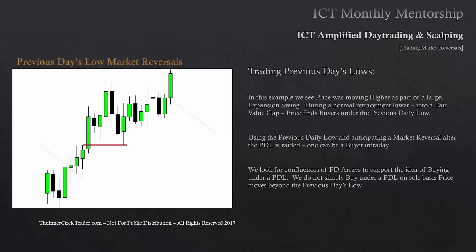When looking to trade below the previous day's low as a buyer and anticipating higher prices, price was moving higher as part of a larger expansion swing. During a normal retracement lower into a fair value gap, price finds buyers under the previous day's low. This candle opens, trades down, closes in the fair value gap, and then rallies up with a higher close. The candle prior to it trades down below that candle's low. You can already be thinking about being a buyer below that candle's low because the fair value gap exists below it. When price trades under the previous day's low and into a discount array like a fair value gap, that's where you'll find buyers.